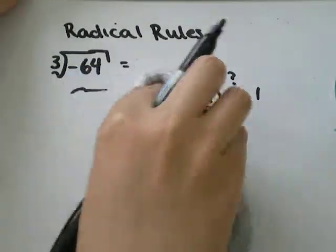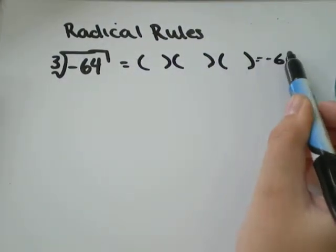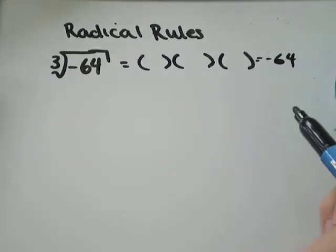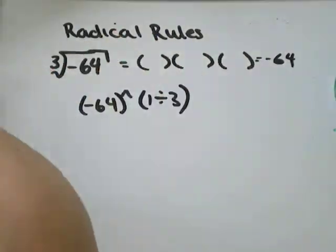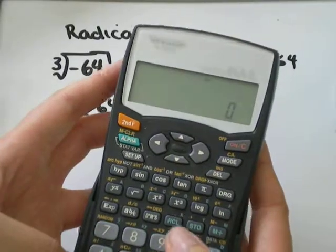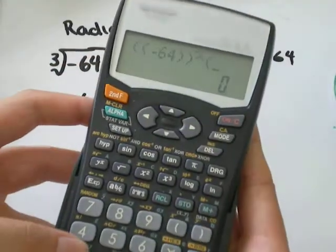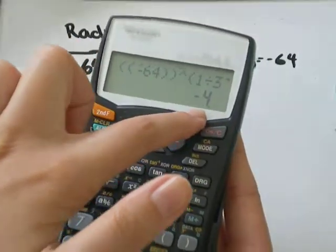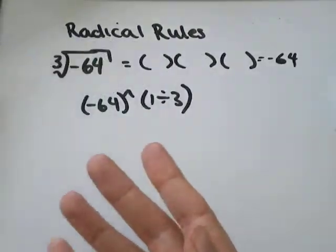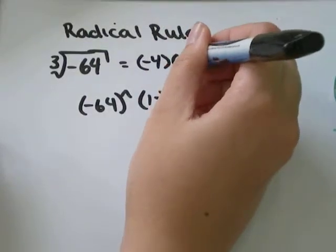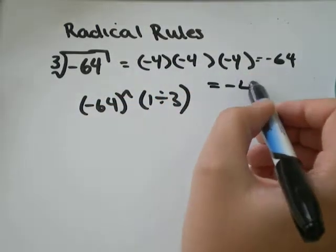So we're totally fine with the cubed root of negative 64. We need to find what number multiplied by itself 3 times equals negative 64. On my calculator I'd input negative 64 to the exponent of, in brackets, 1 divided by 3 — it's really important to put that exponent in brackets. I get negative 4. You can check: negative 4 times negative 4 times negative 4 equals negative 64. So the cubed root of negative 64 is equal to negative 4.